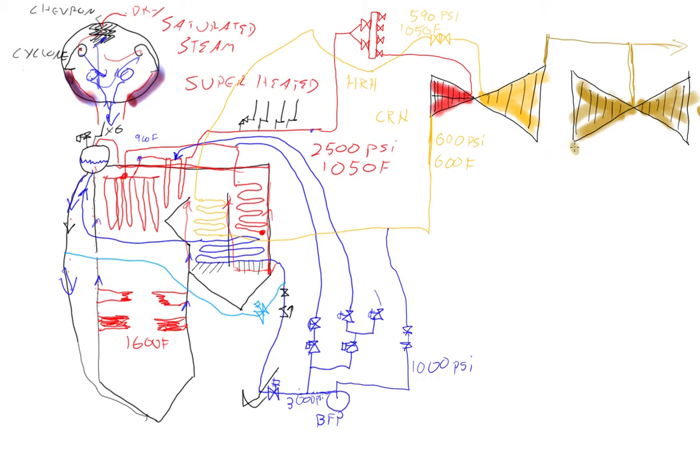Then after it goes across all six sections it exhausts down into the condenser. We have tube bundles and each of these has thousands of little tubes in it. This is circulating water coming from the cooling tower.